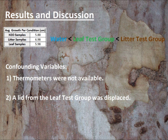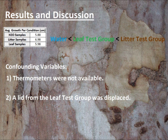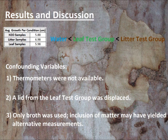This would have played a major role in the growth of those sprouts. And three: while Team Koala felt that using steeped broths from our leaves and litter should have been enough to show allelopathic effects of eucalyptus on the seeds, we must not rule out the possibility that had we used the matter itself from the leaves and litter, we could have seen alternative results.